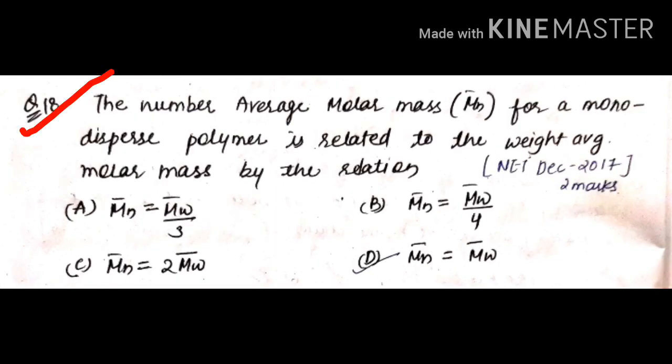This question was asked in December 2017 for two marks: for a monodisperse polymer, how is number average molar mass M̄N related to weight average molar mass M̄W? I explained that the poly-dispersity index has two types: homogeneous (monodisperse) and heterogeneous. For a monodisperse polymer, M̄W / M̄N = 1, meaning M̄N equals M̄W. So the answer is D.